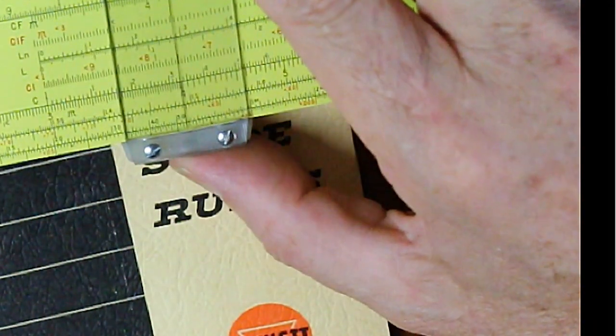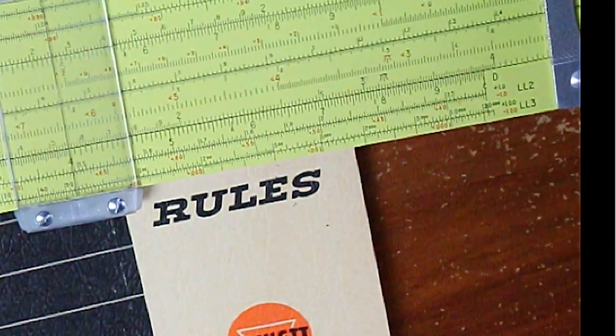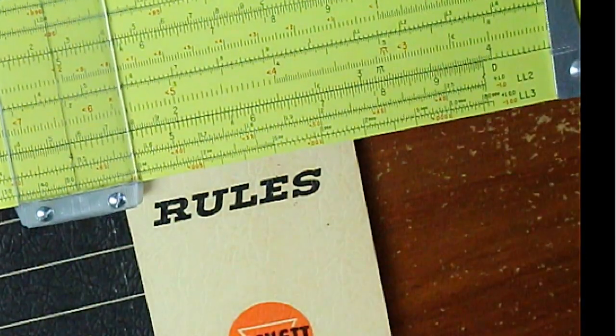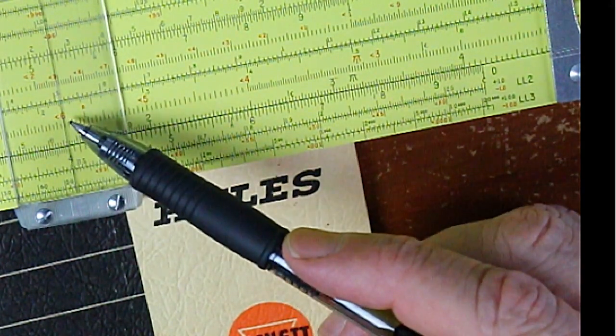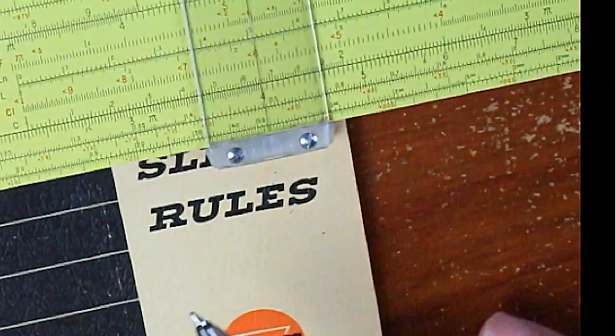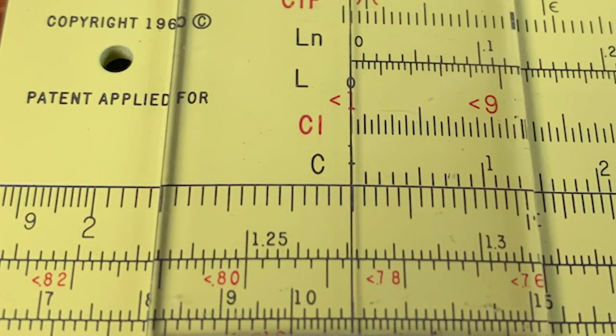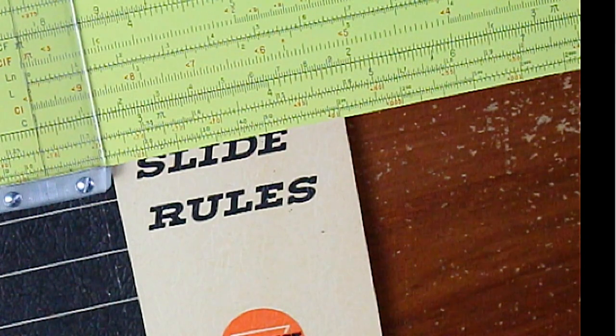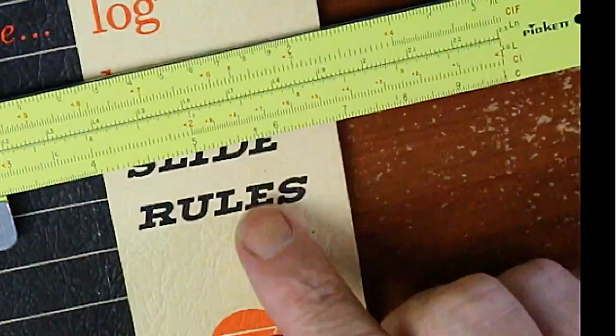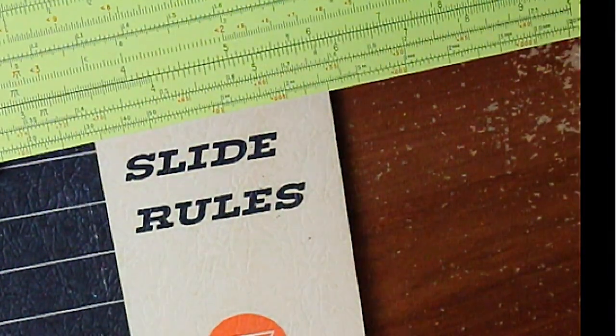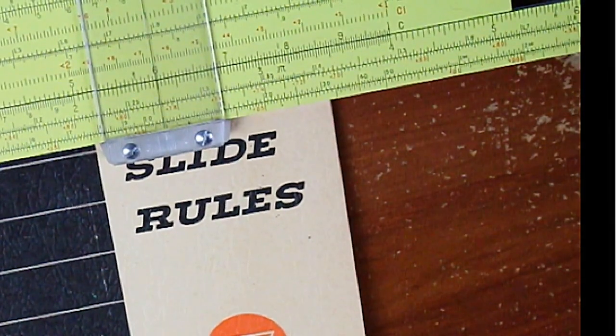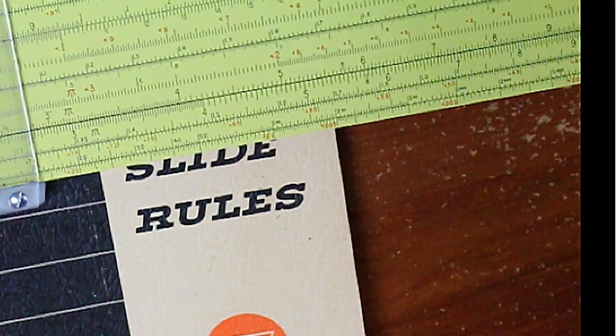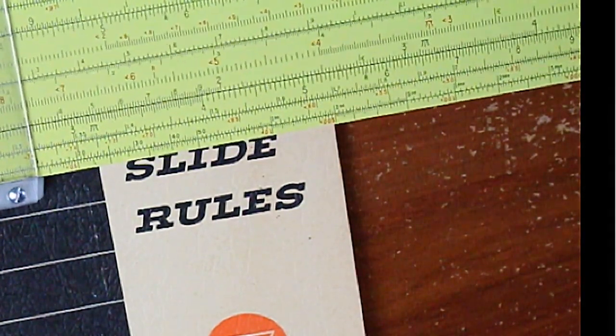Just to show you that that works, let's go out here to 6, and then we'll divide that by 2. And as you can see, our answer is right here, 3. Now, let's take advantage of this and see if we can find a better way to multiply 4 by 6. So, we know the CI scale is 1 over the number that's listed. So, here is 6. So, essentially, by putting the 6 over the 4, we are dividing the 4 by 1 over 6, because the 6 here represents 1 over 6, and then we go back and we read our answer, 24. See, there's the 2, 1, 2, 3, 4. You have to keep track of your decimal places with a slide rule.